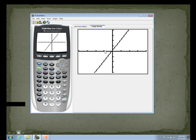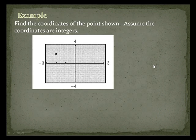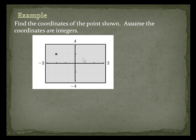Find the coordinates of the point shown. Assume the coordinates are integers. We also need to assume that every hash mark is worth 1 — we know that because we have negative 3 here, so that means negative 1, negative 2, negative 3. So this ordered pair: the x-coordinate will be negative 2, and the y-coordinate will be positive 2.